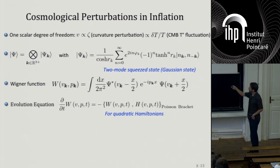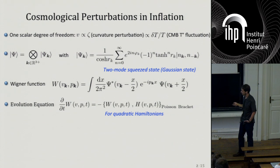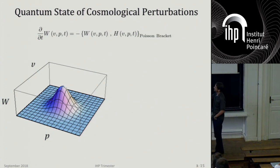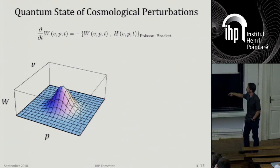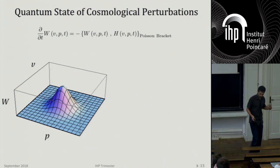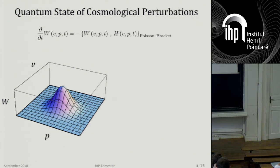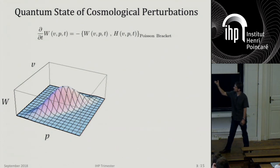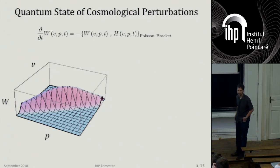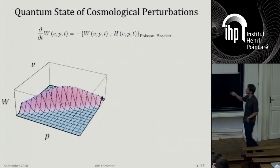Starting from the vacuum state, I can compute the Wigner function, which looks like a Gaussian function — always positive in the v and p space. Then using the Schrödinger equation to evolve the wave function, I can compute W at later times. As you move on and cross out the Hubble radius, this function rotates and gets very squeezed in one direction and very spread in the other. That is why we call this a squeezed state — because of the shape of the Wigner function.